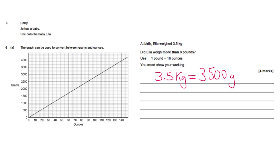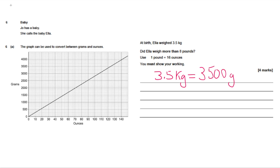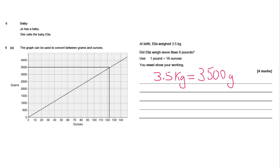Now we go back to the chart and convert 3,500 grams into ounces. Put lines on the conversion graph — going across from 3,500 grams and then down. We can see it's just over 120 ounces; each square is worth 2, so it's about 124 ounces.